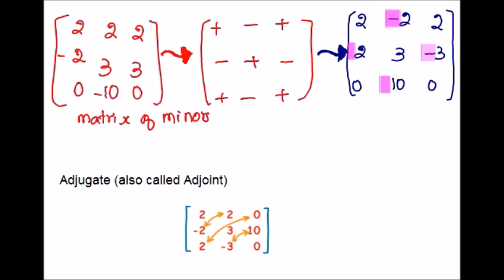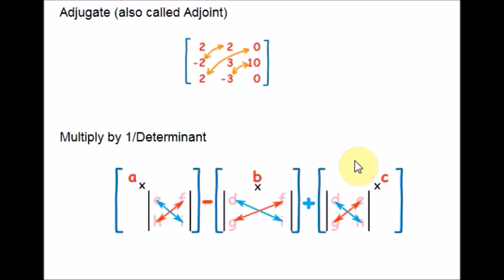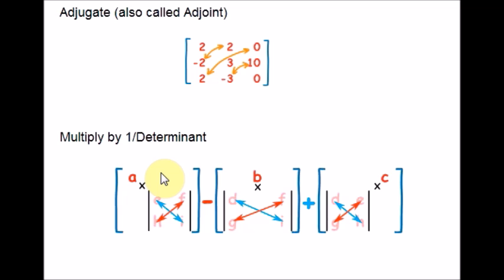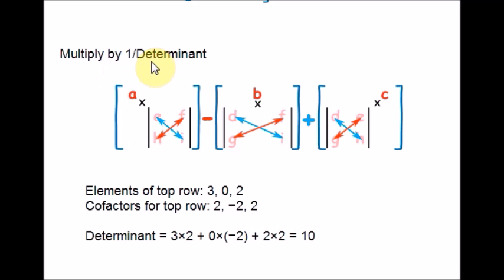Now for the final step: multiplying by 1 over the determinant. To find the determinant of the original matrix, this is not too hard because we already calculated the determinants of the smaller parts in the matrix of minors step. Place signs alternately — positive, negative, positive — for the top row. We multiply each of the top row elements by the cofactor of the same location. The top row elements are 3, 0, 2 and the cofactors for the top row are 2, negative 2, and 2. We then multiply 1 over the determinant by the adjugate to get the inverse.